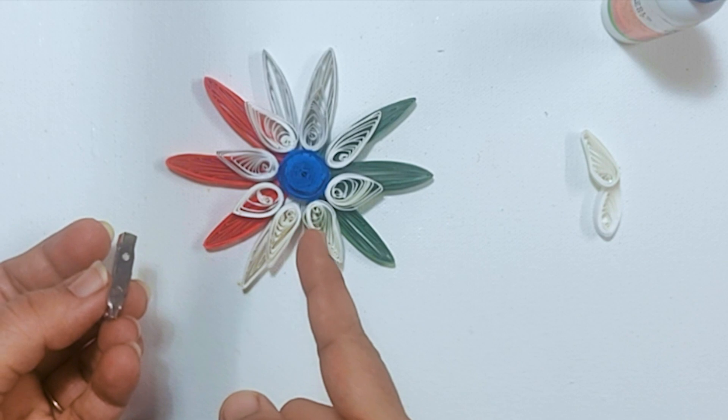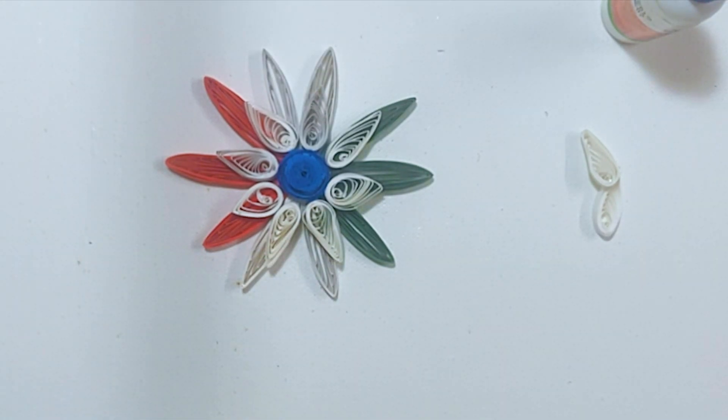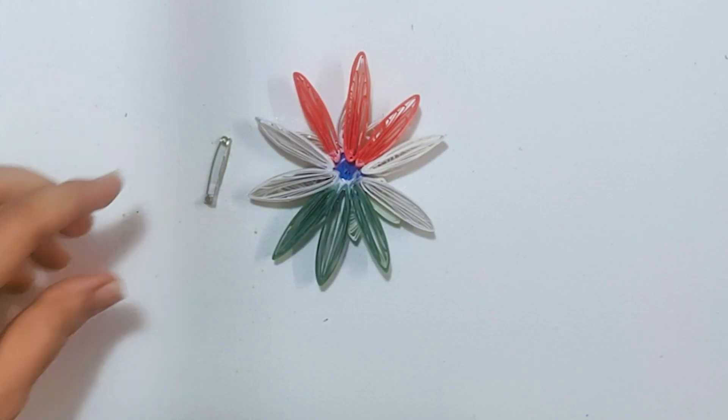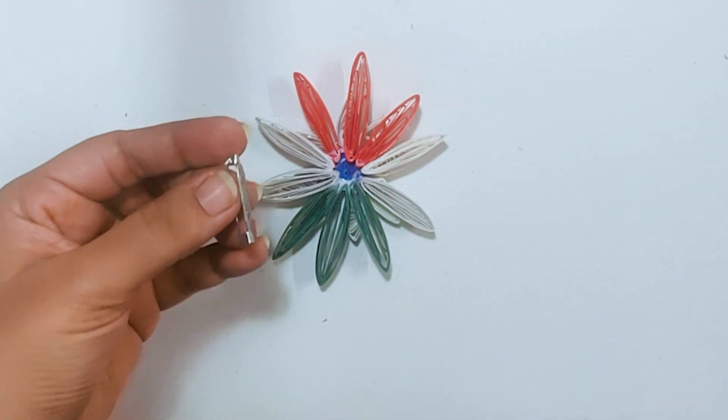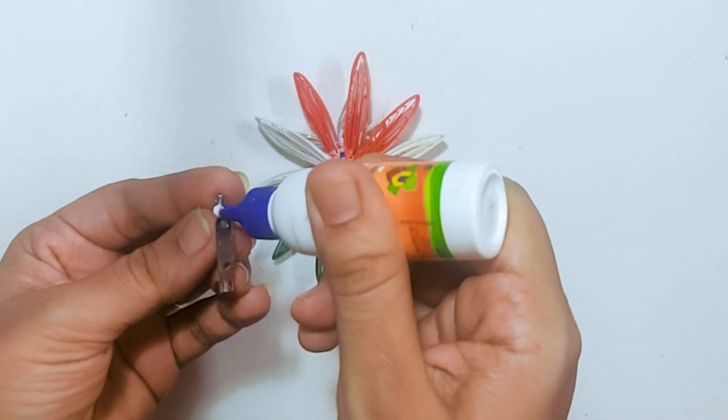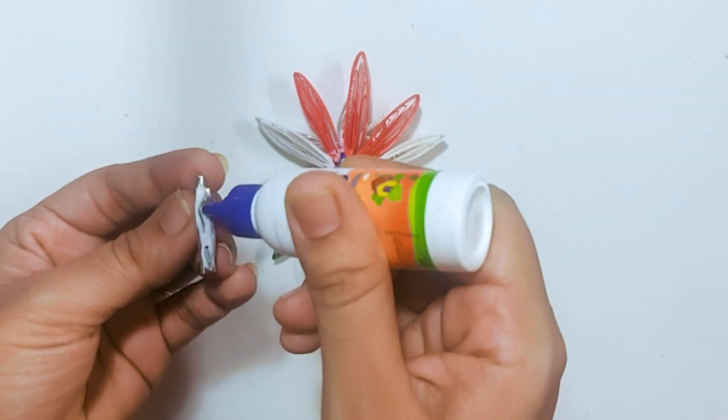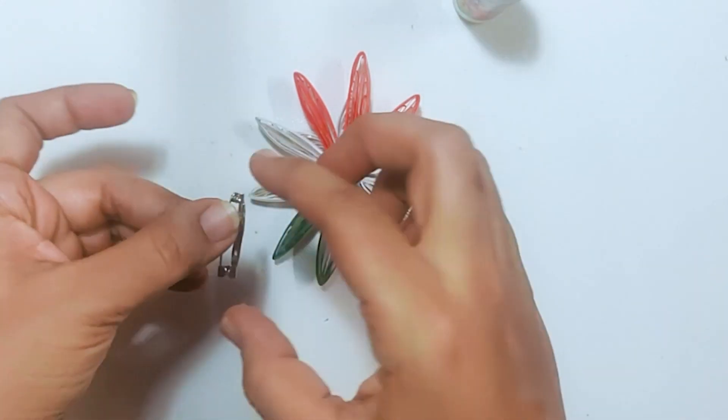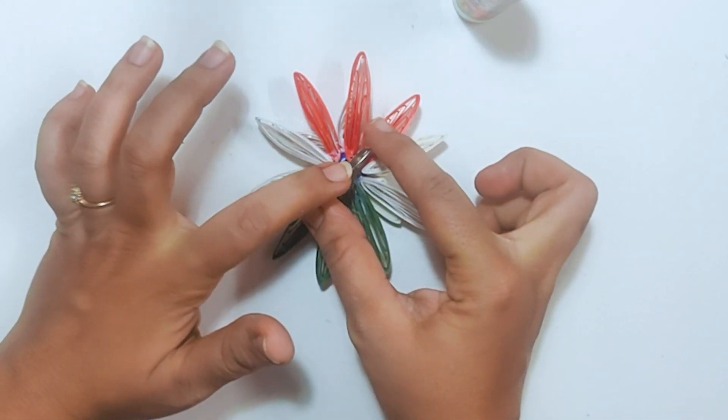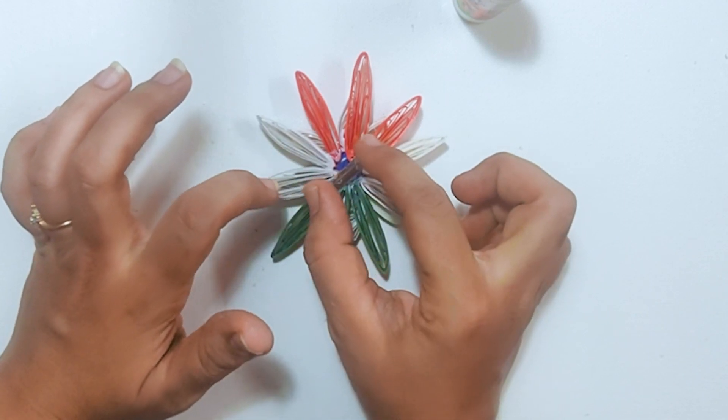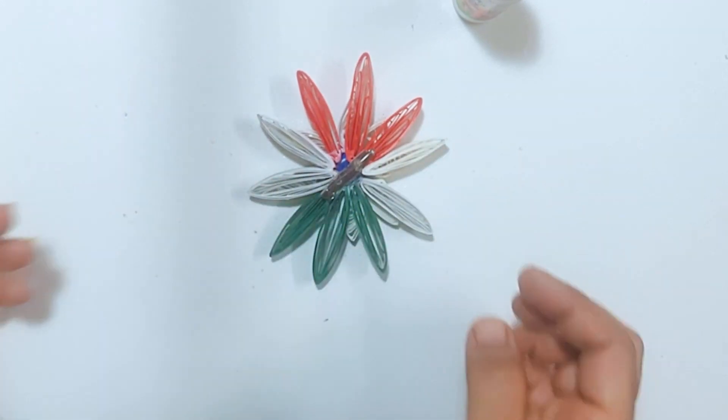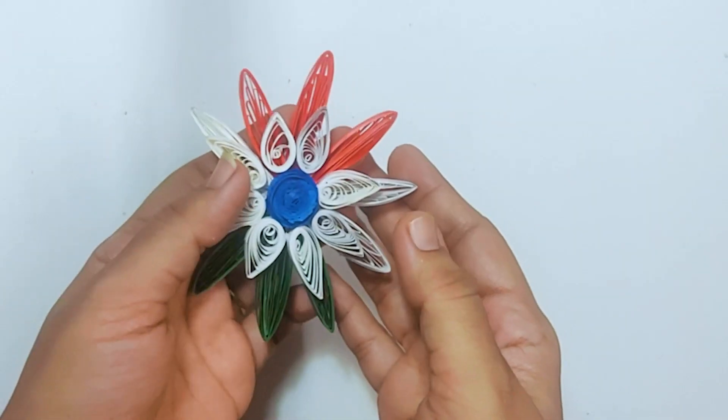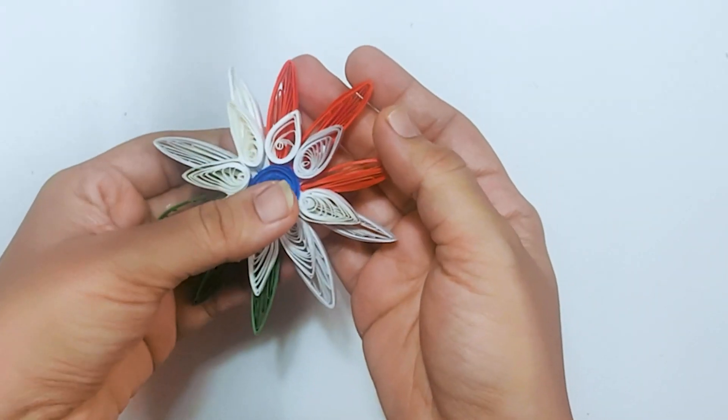Once you do that, flip the entire flower and keep the pin ready. Apply some glue on the pin and fix the pin to the center of the flower like this. Now, after it cures, this is how pretty it looks. Thank you. Happy Independence Day everyone.